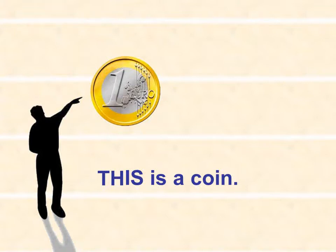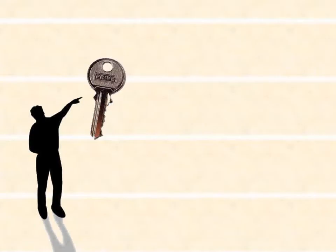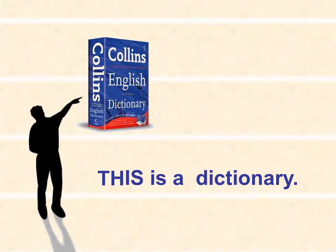And if the object is far, we use that. Now think, what will be the answer here? What is given here? Yes, it is a key. The answer is, this is a key. This is a dictionary. Where do we use a dictionary? To search the meanings.